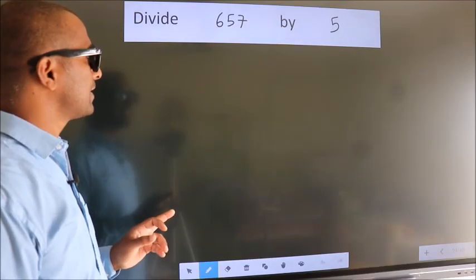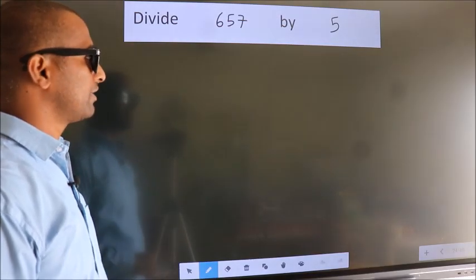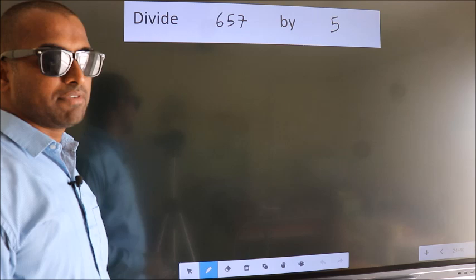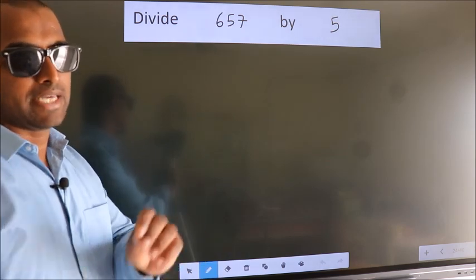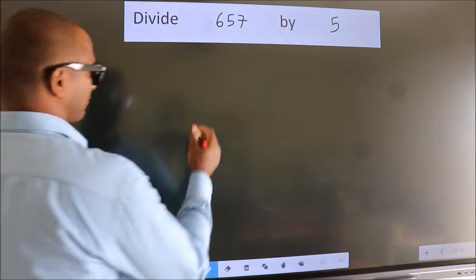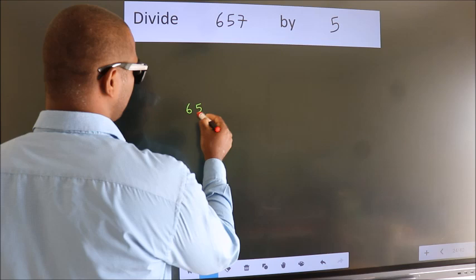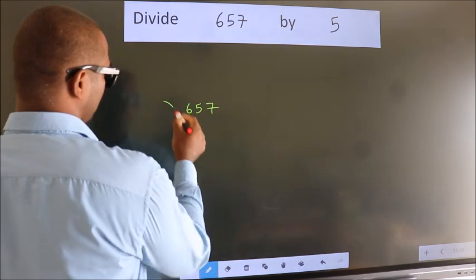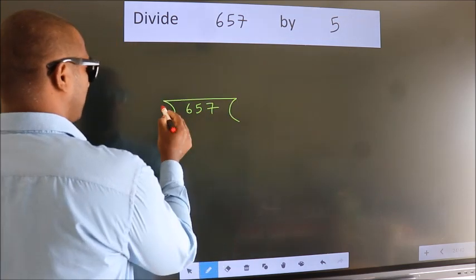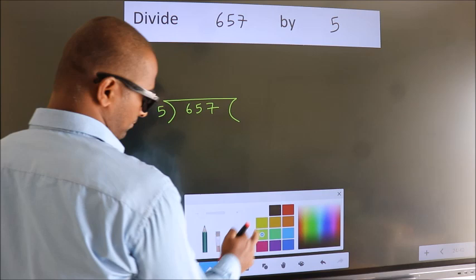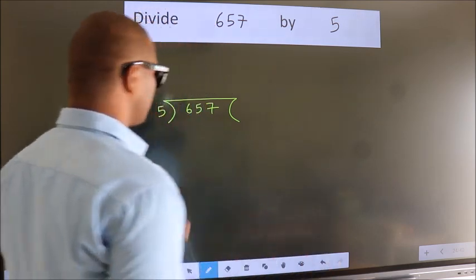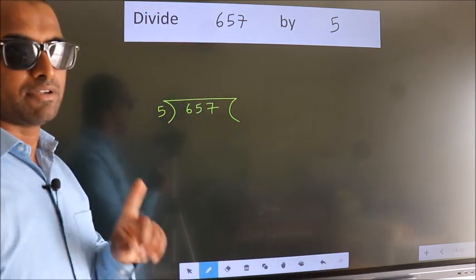Divide 657 by 5. To do this division, we should frame it in this way: 657 here, 5 here.